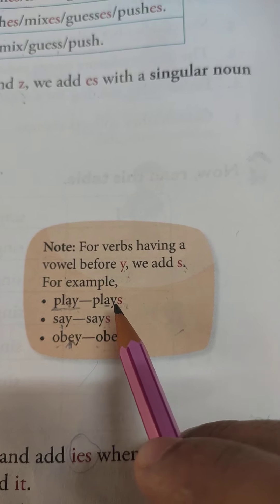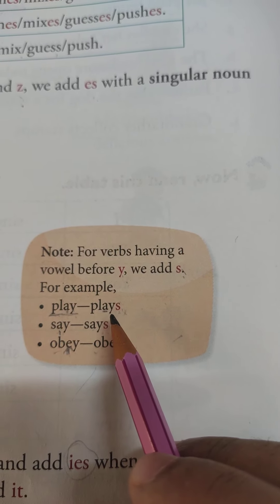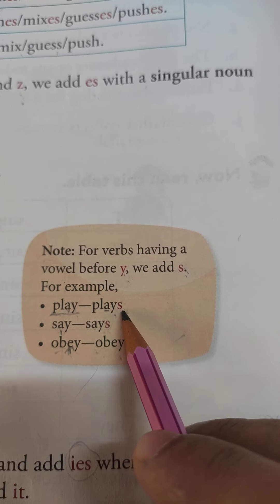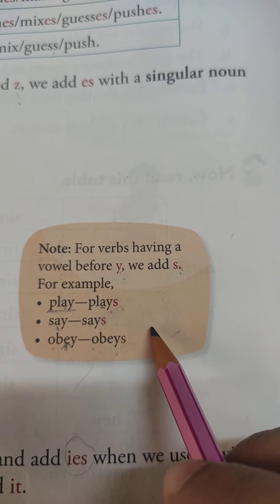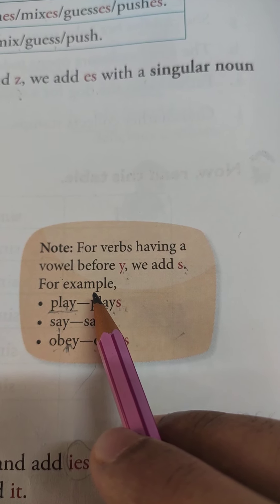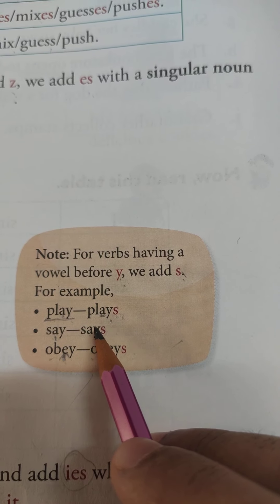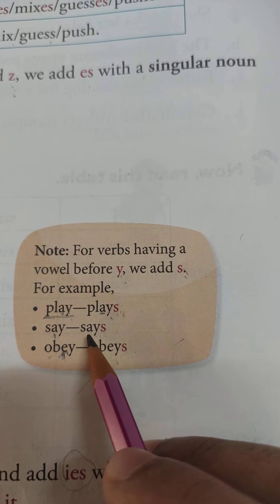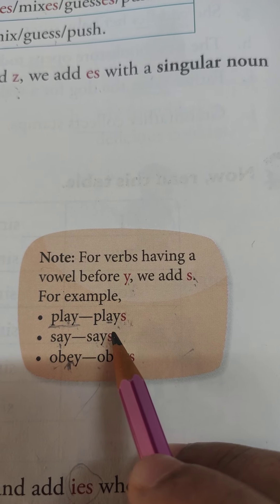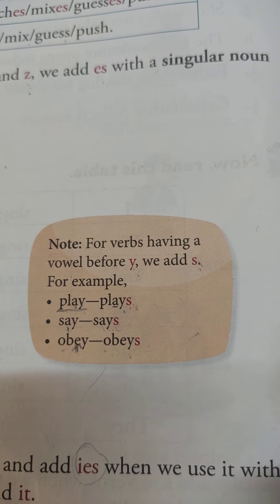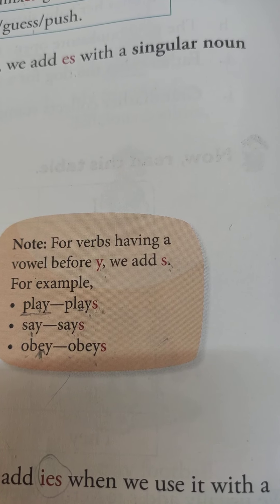For example: she plays football very well, he says very nicely. But remember — when any vowel comes before y, we add only 's', and this applies only when using the verb with a singular noun or pronouns like he, she, and it.